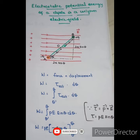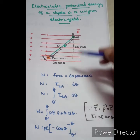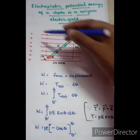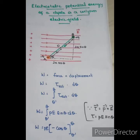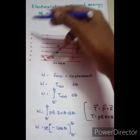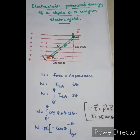In this electric field, we can see that the field lines are emerging out from the positively charged sphere — the positive charge. The electric field lines emerge from positive charges radially outward.